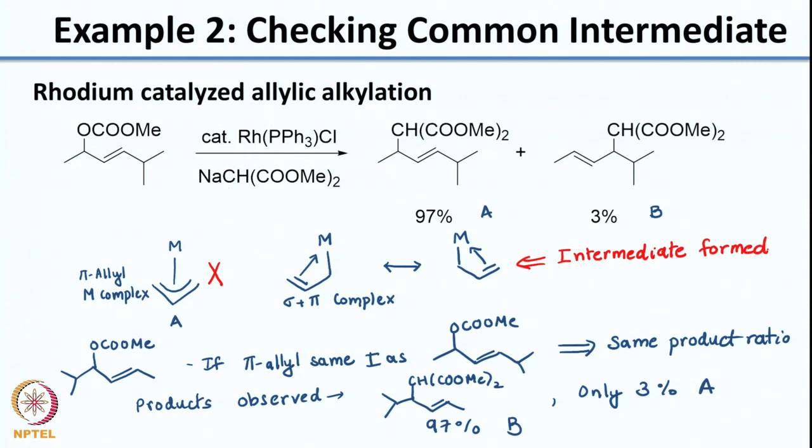This is a very nice example where by switching the substituents on the reactant you get completely different product ratios, and indirectly it tells you what intermediate is being formed. We saw 2 different examples of how you use the common intermediate concept to figure out the nature of the reaction intermediate. Now we will move on to other experiments.